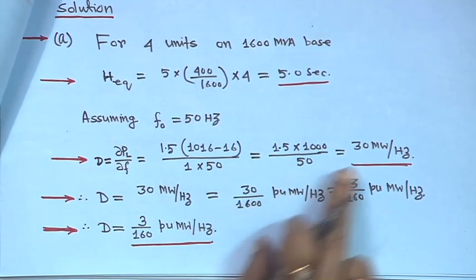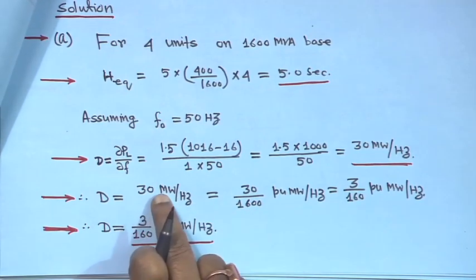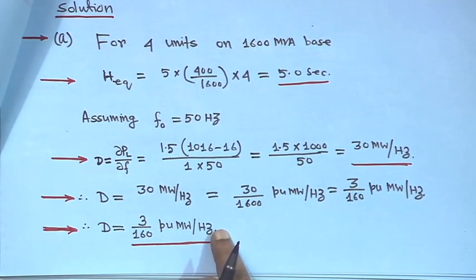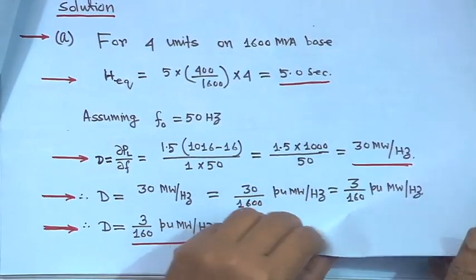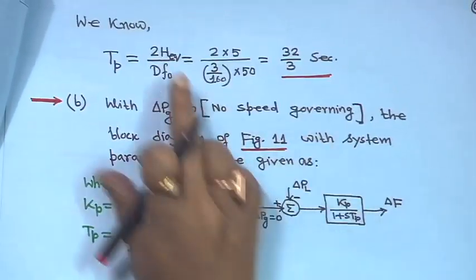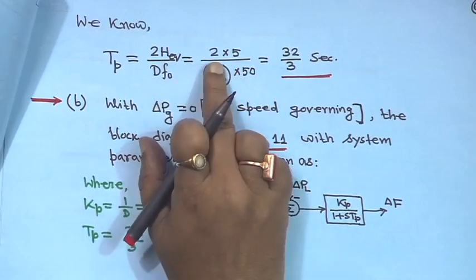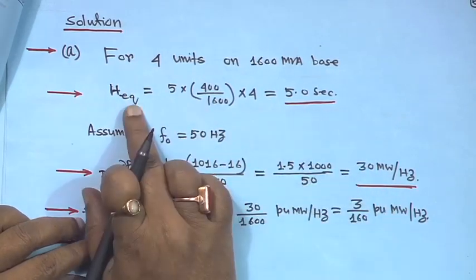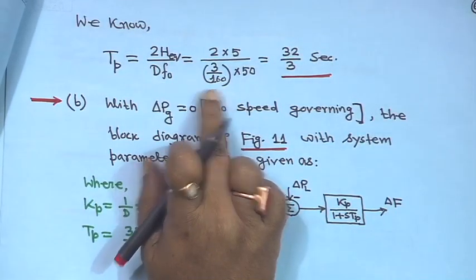The 30 MW in the numerator is a real-unit value, and dividing by the 1600 MVA base converts it to per-unit MW. Therefore D equals 3/160 per-unit MW per hertz. Now T_p equals 2 H_eq divided by (D × f_0) equals 2 × 5 divided by (3/160 × 50), giving T_p equal to 32/3 seconds.